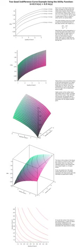A graph of indifference curves for several utility levels of an individual consumer is called an indifference map. Points yielding different utility levels are each associated with distinct indifference curves, and these indifference curves on the indifference map are like contour lines on a topographical graph. Each point on the curve represents the same elevation. If you move off an indifference curve traveling in a northeast direction, assuming positive marginal utility for the goods, you are essentially climbing a mound of utility. The higher you go, the greater the level of utility. The non-satiation requirement means that you will never reach the top.